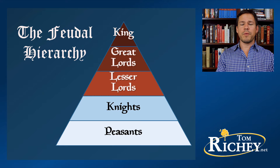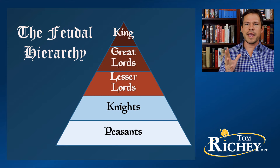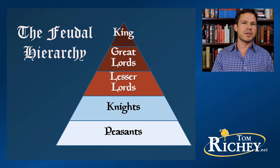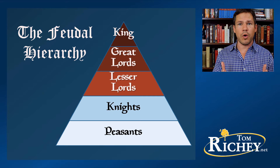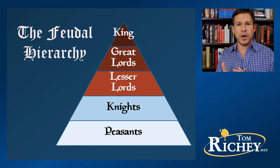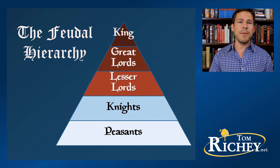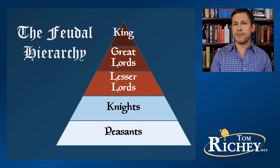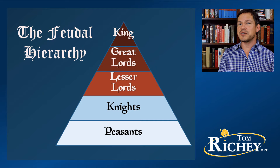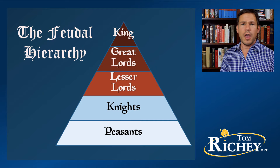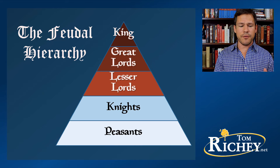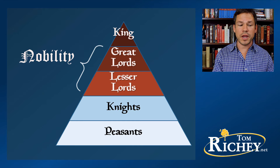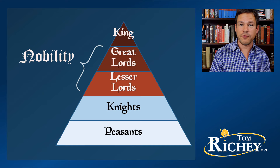Looking at the feudal hierarchy, we see the king at the very top — the only person not in a state of vassalage, not swearing an oath to anyone. The great lords swear an oath of vassalage directly to the king, and then they in turn have their own vassals, the lesser lords, who then maintain knights. The knights are not nobles, but they still have land. The nobility is made up of the great lords and the lesser lords; knights are people with means but not nobility.